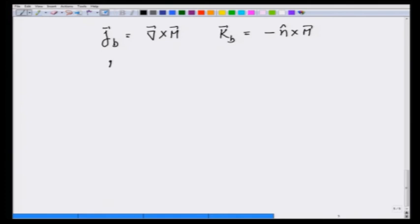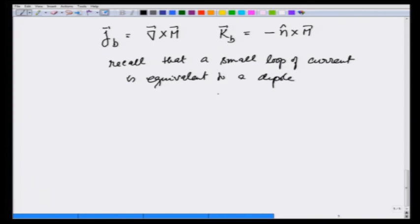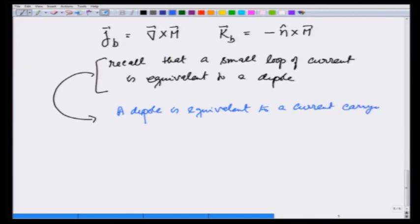Also recall that a small loop of current is equivalent to a dipole. A dipole is equivalent to a current carrying loop.